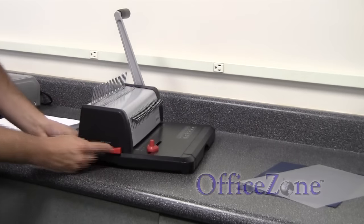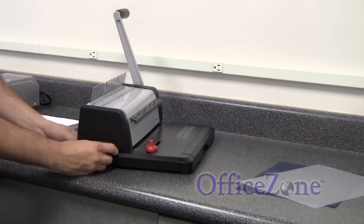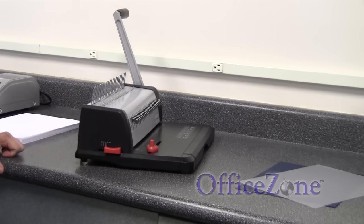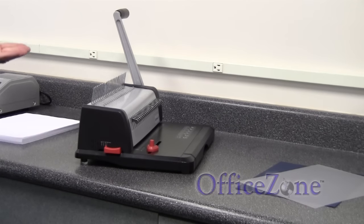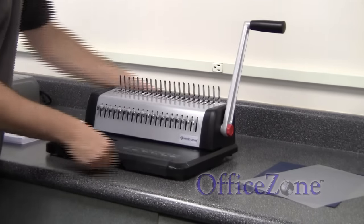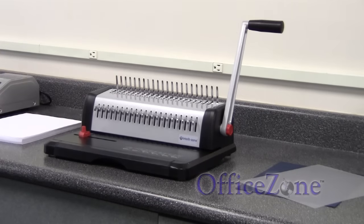And in the case of this machine that has an adjustable margin depth, that basically just determines how far into the paper the holes punch. Generally, if you're binding a thicker book, you're going to want the holes to be punched in a little bit more. Thinner book, they can be a little bit closer to the edge. And that's really all there is to a comb binding machine.